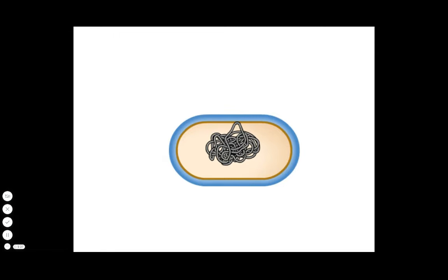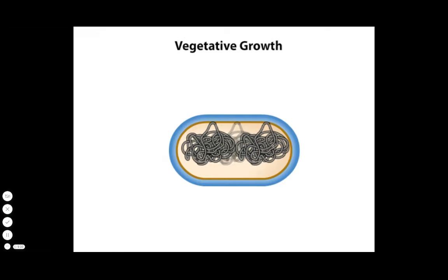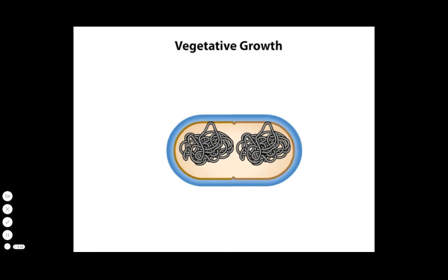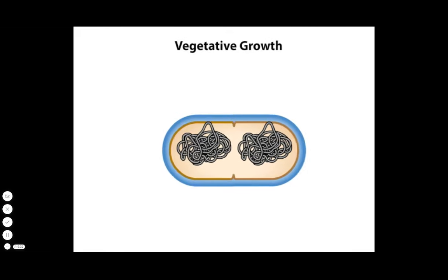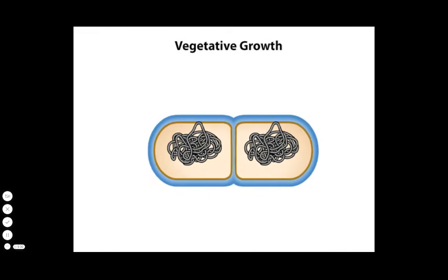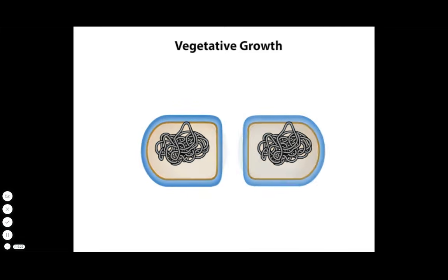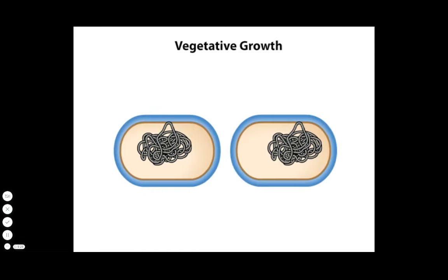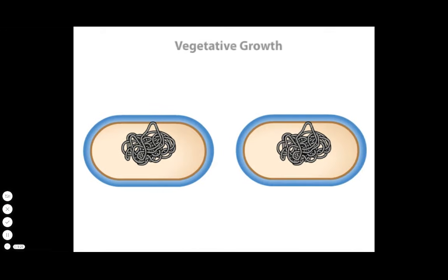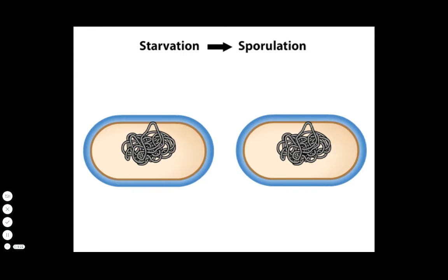When growing in rich media, this microbe undergoes normal vegetative growth. Bacillus subtilis can replicate every 30 to 60 minutes. In contrast, starvation initiates sporulation, an elaborate eight-hour genetic program that ultimately yields a spore.